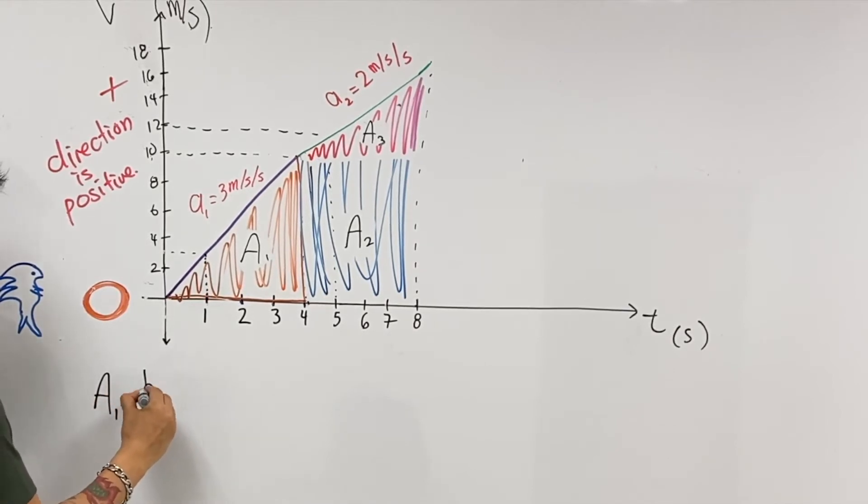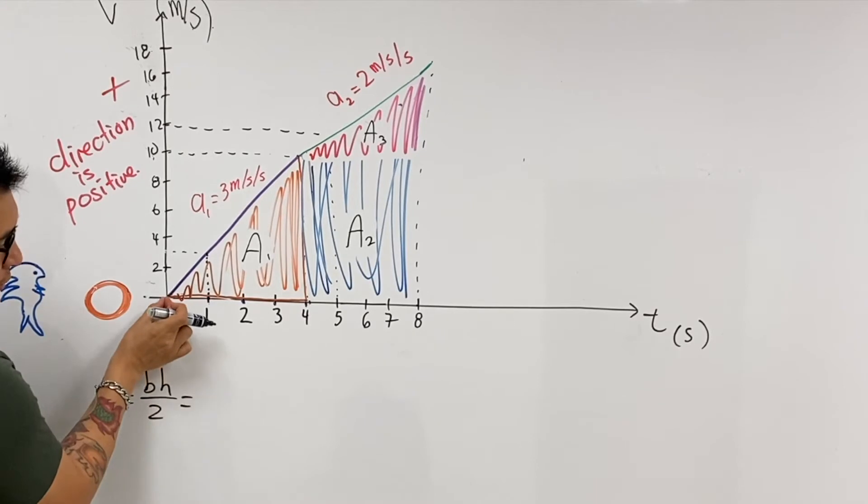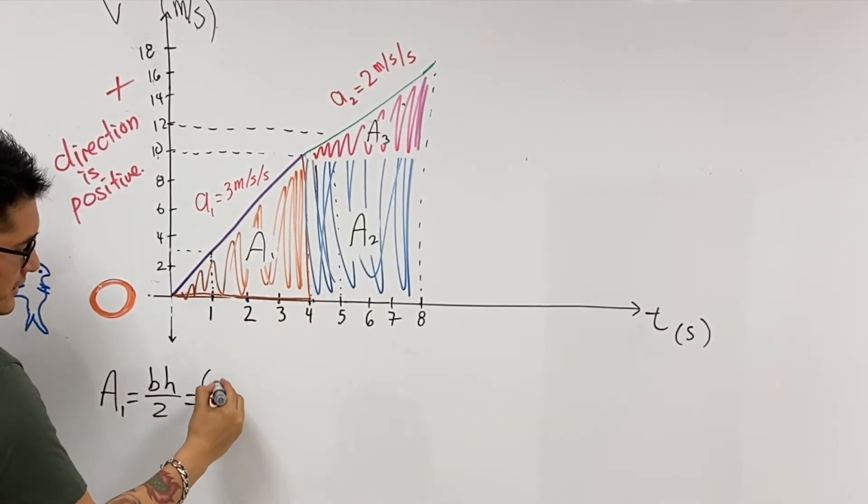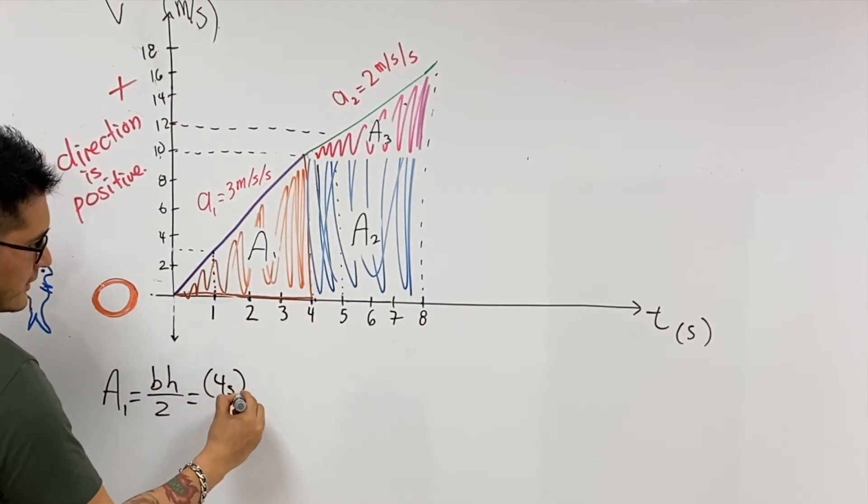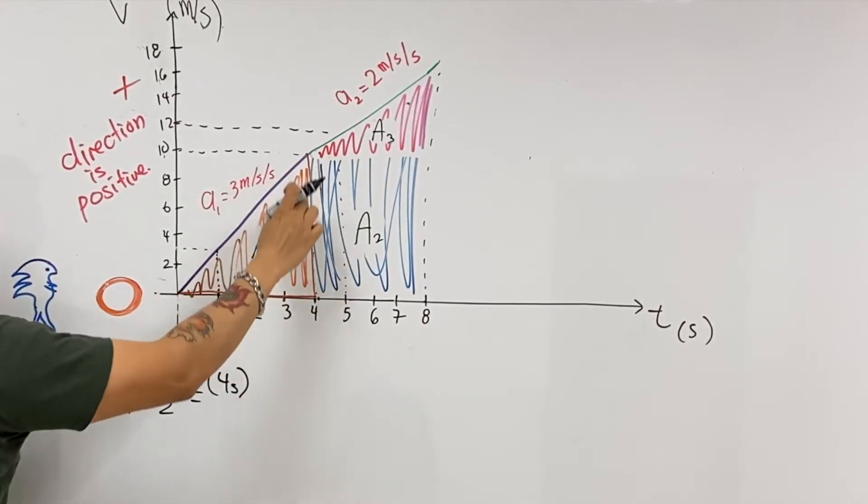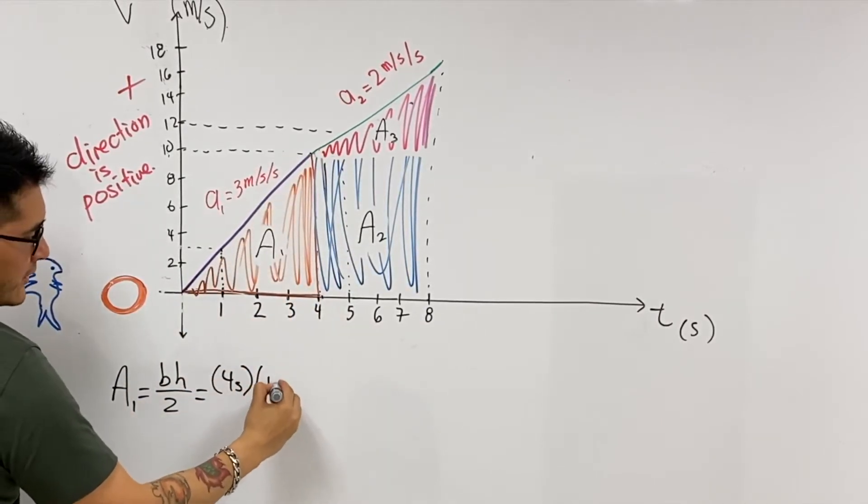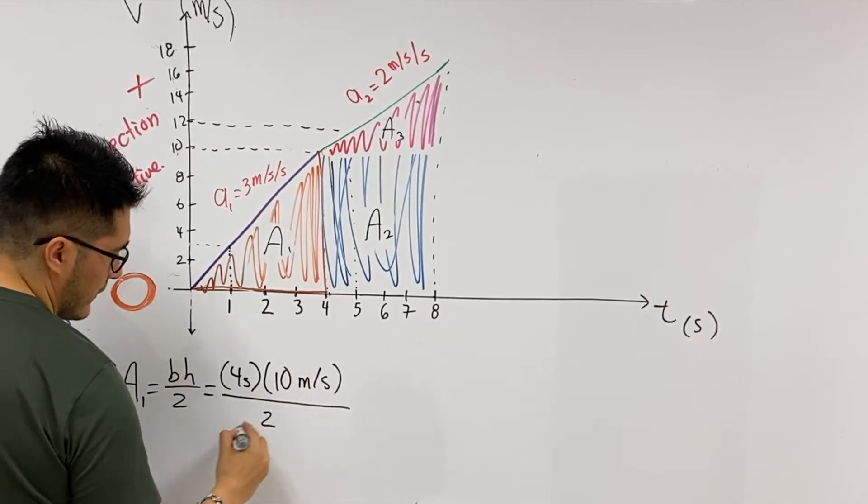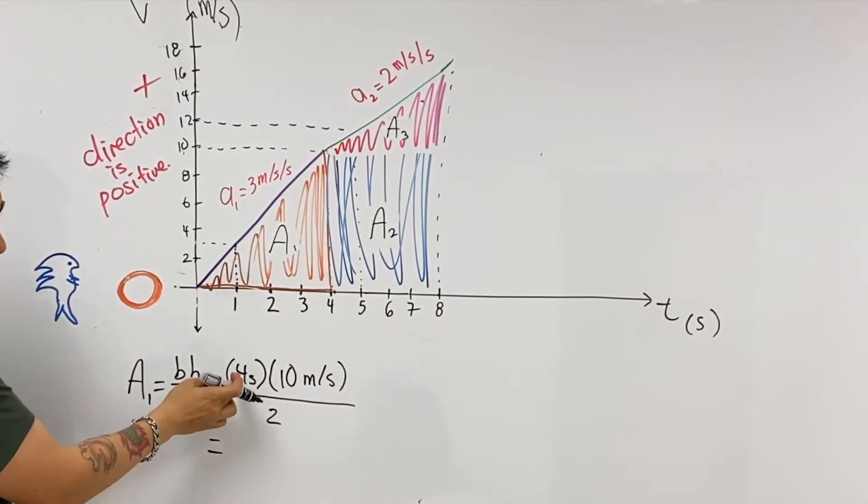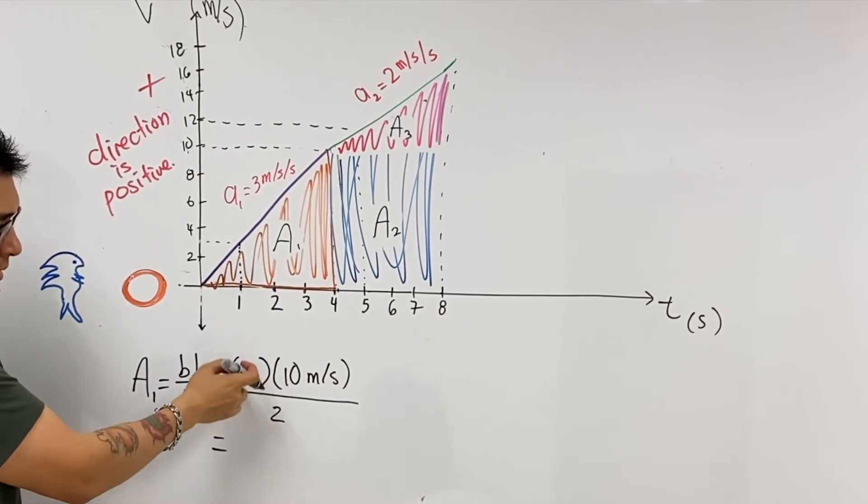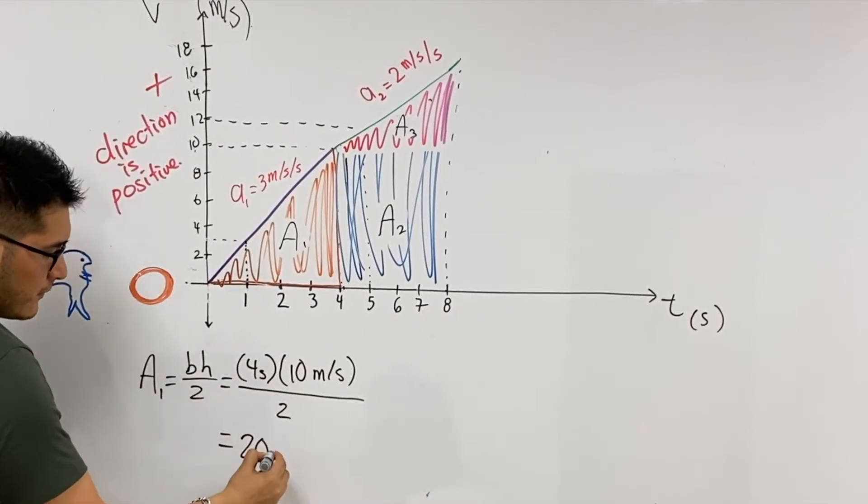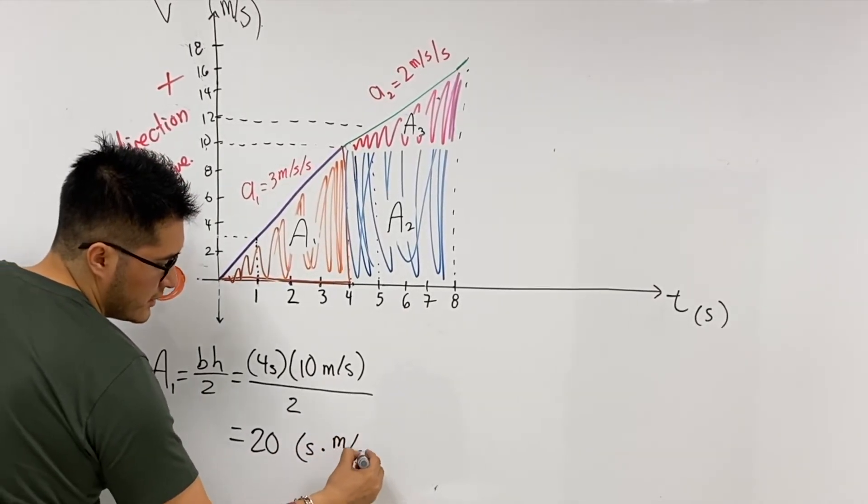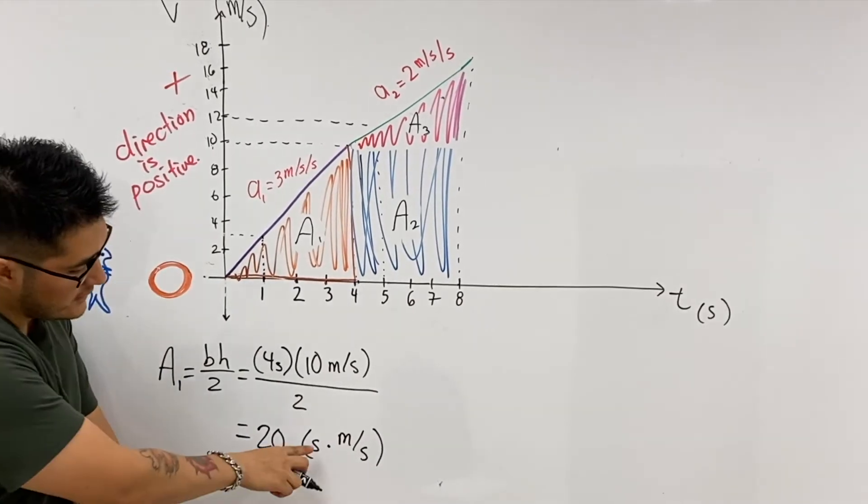Area one is going to be base times the height divided by two. What do we mean by base? Well, that's going to be a four second interval of time, change four seconds. And what is the height? Ten, but what were the units? Ten meters per second. So let's calculate this. Four divided by two is two, two times ten is twenty.